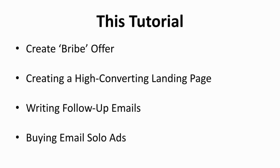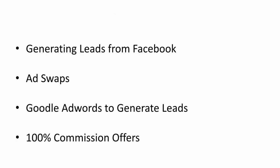A small list might not be enough to earn a huge profit. In order to increase your list, you can buy email solo ads from other marketers. This will be your stepping stone to ad swaps. Another surefire way to generate your leads is from Facebook, the world's largest social network platform. Once you have gathered and increased the size of your list, you can now do ad swaps with other marketers. Then, we'll talk more about using Google AdWords to generate leads.